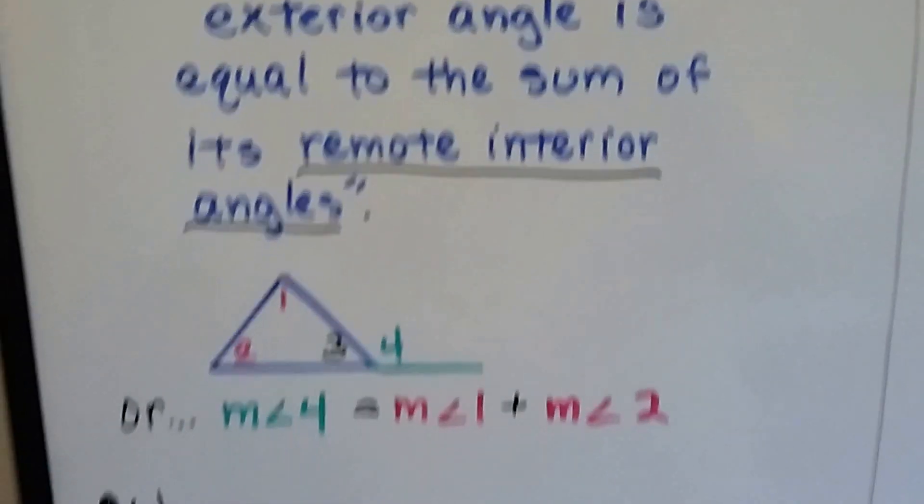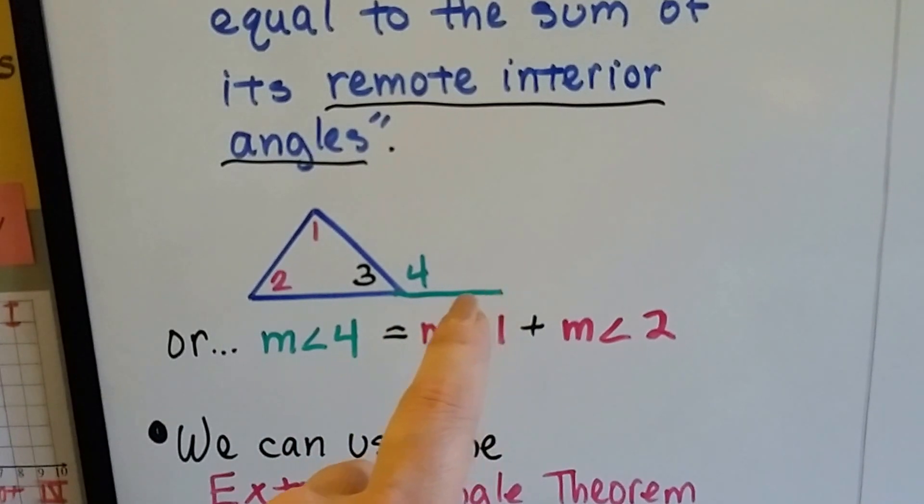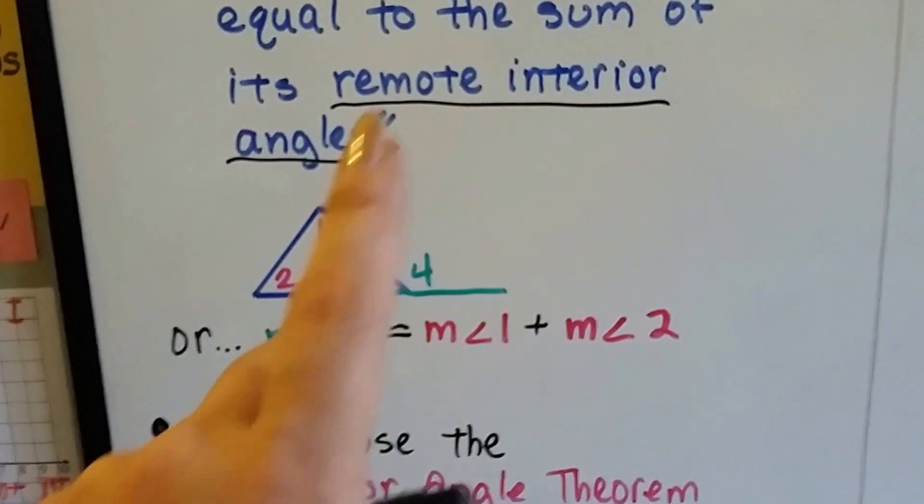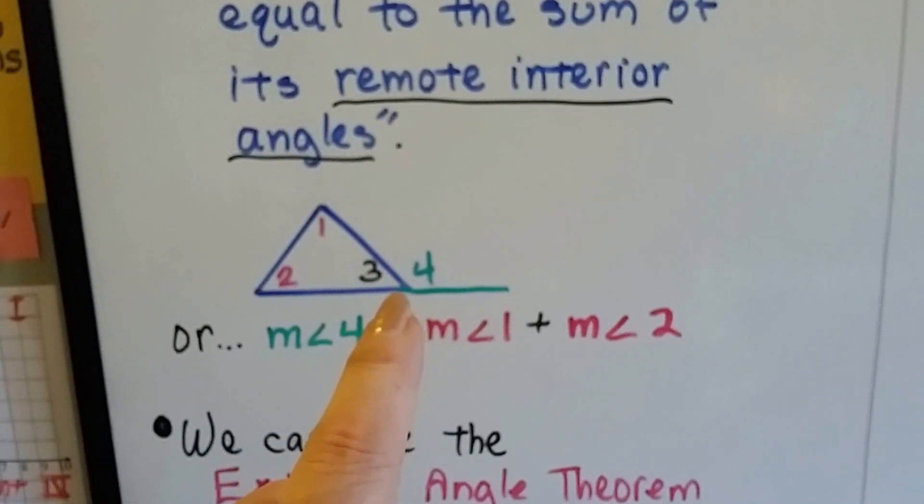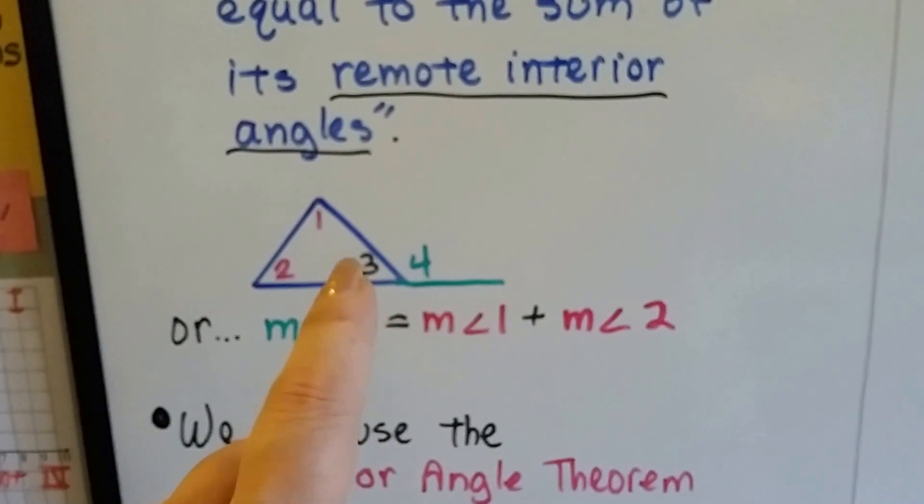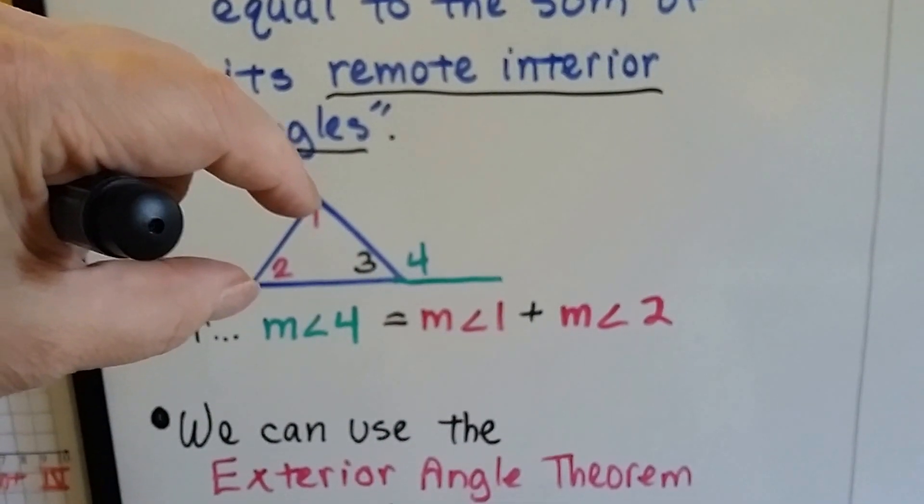So what are those again? Okay, so we know 4 is our exterior angle. We extended the line coming out of the base of the triangle and 4 is our exterior. Well, a remote interior angle does not share a vertex with the exterior angle, and 3 does, so that's not one of them. That's not a remote interior angle. So that means 1 and 2 are our remote interior angles.